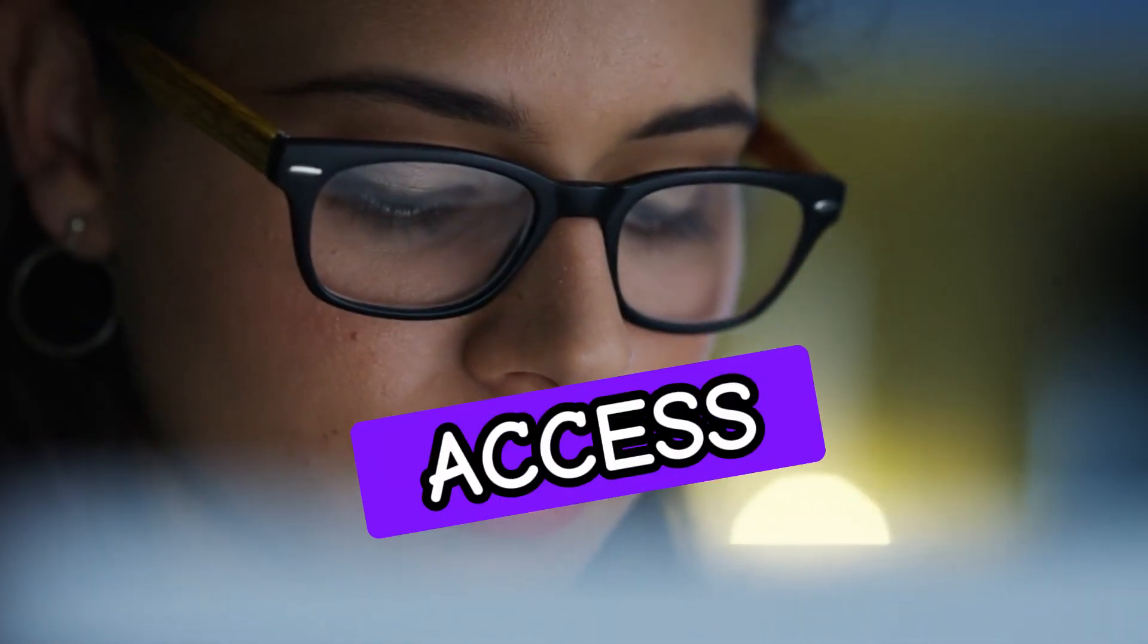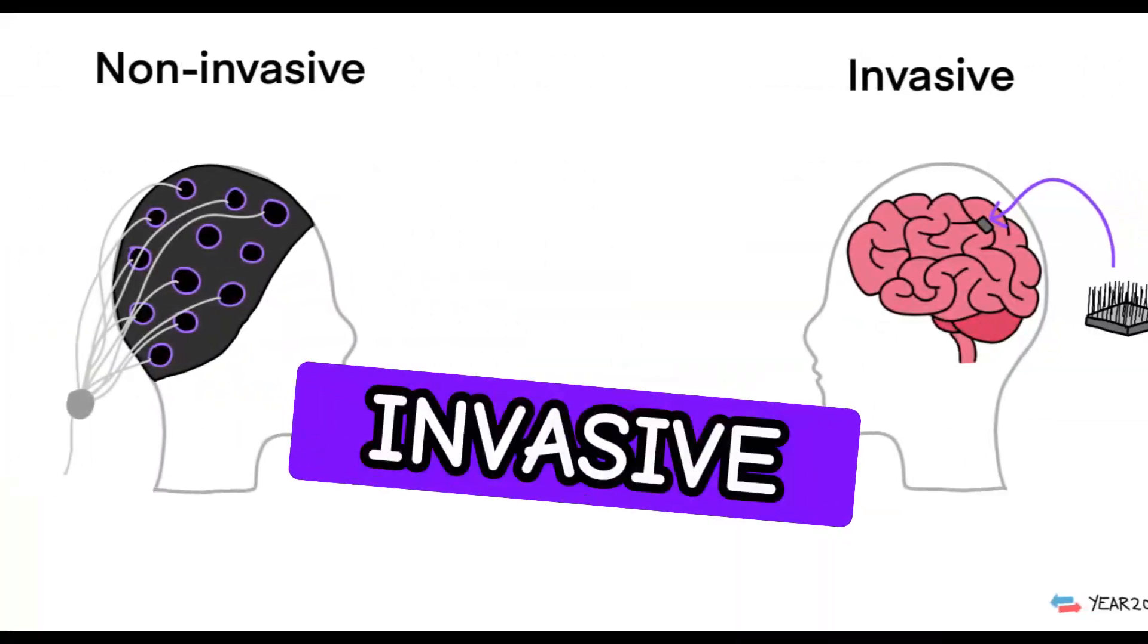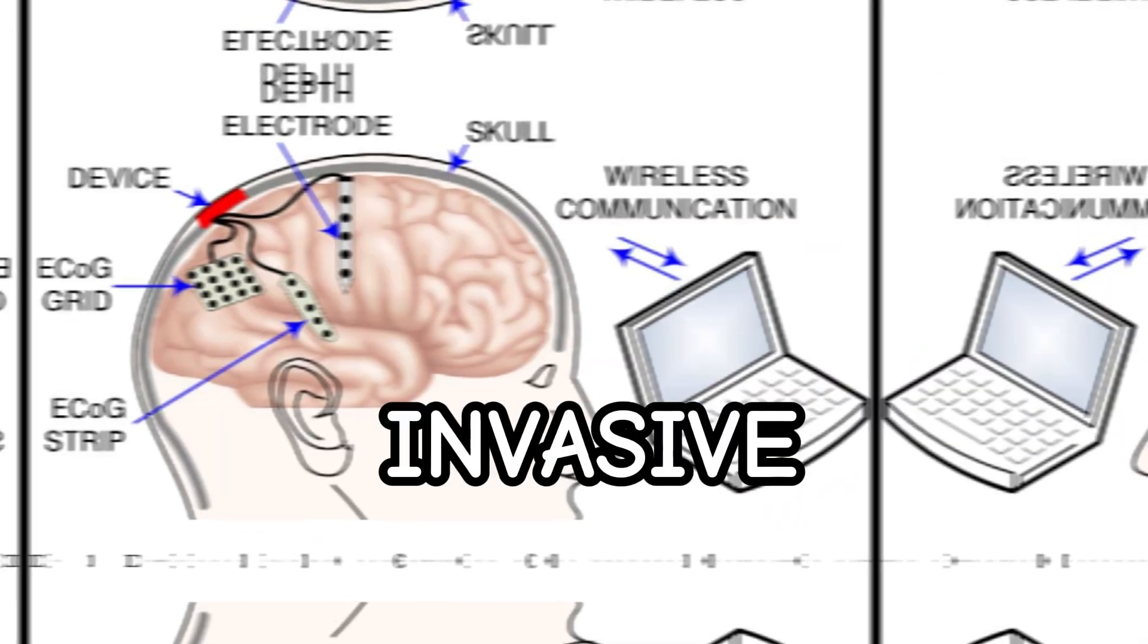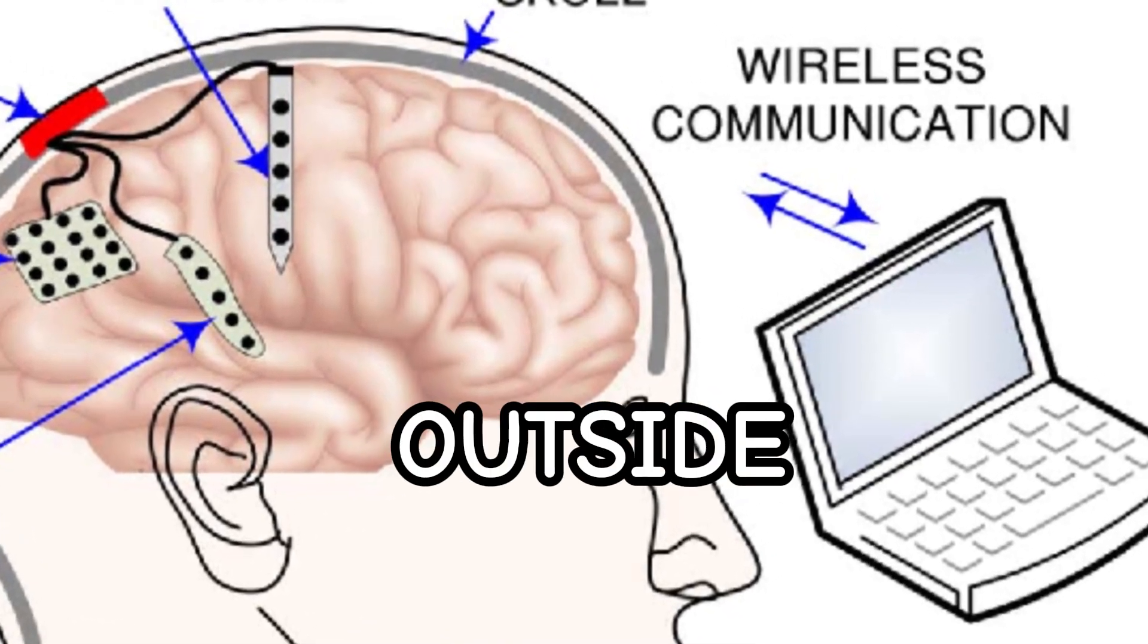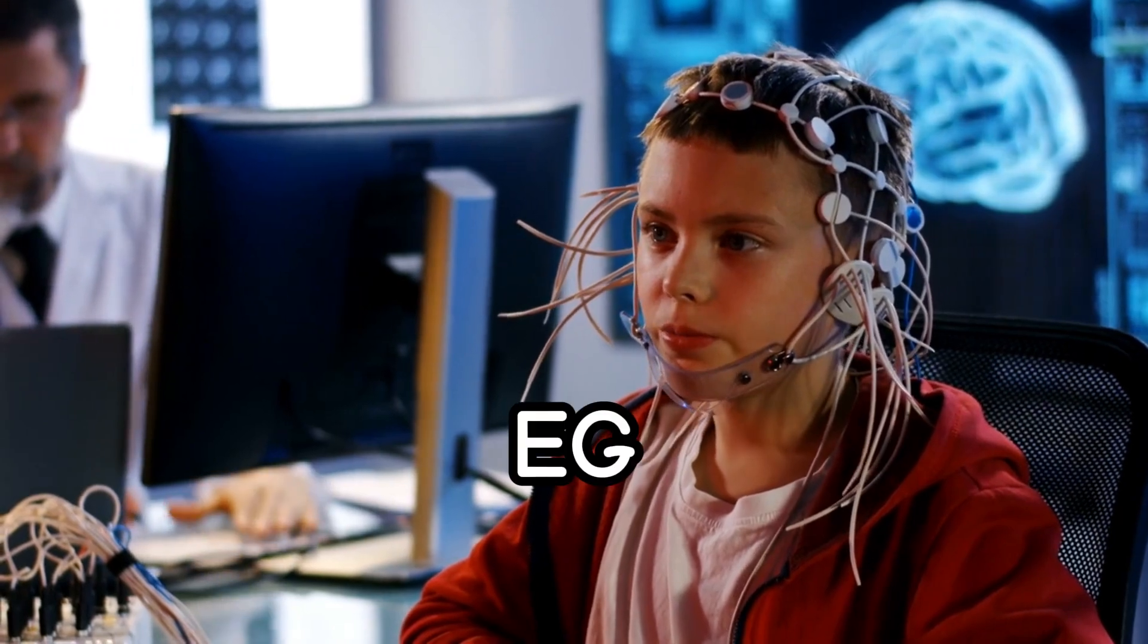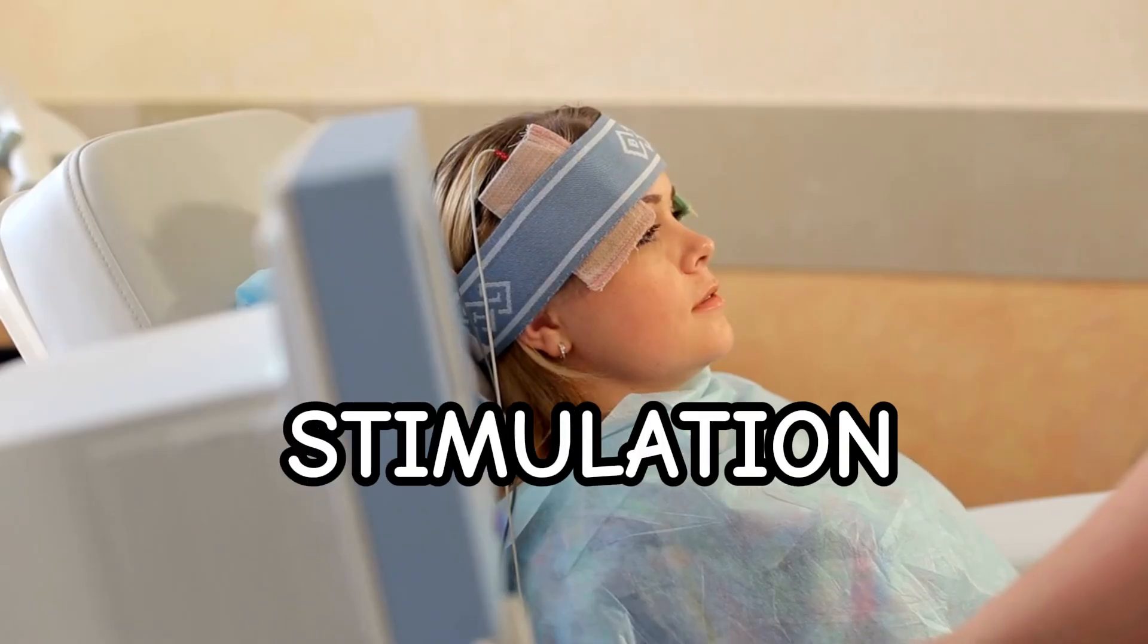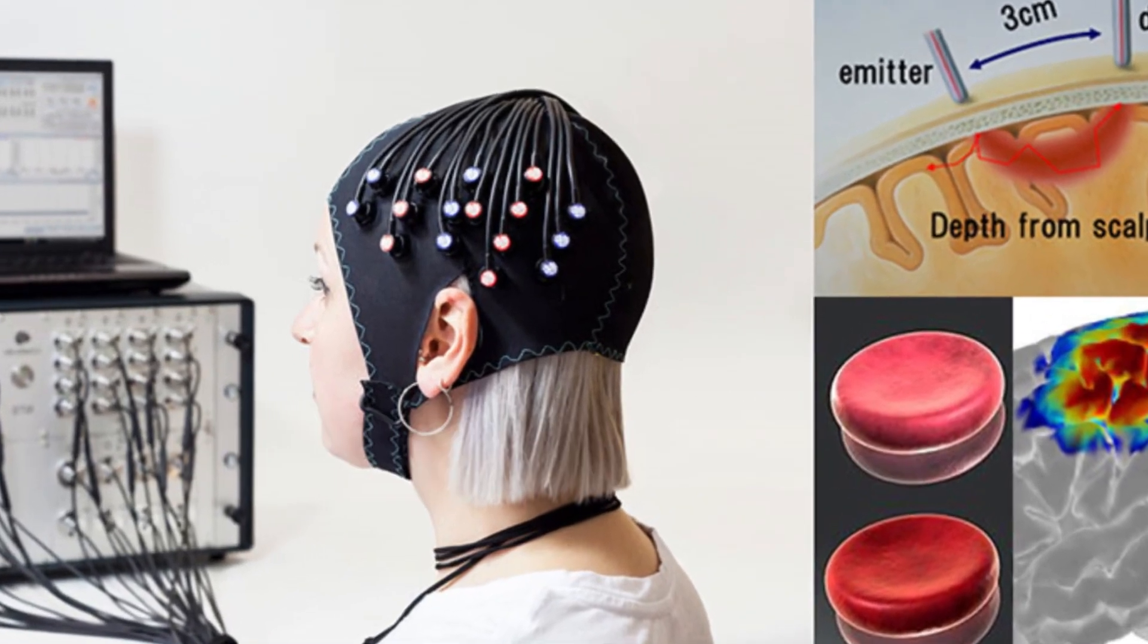But how can a BCI access the brain? Well, there are two main types of BCIs, invasive and non-invasive. Non-invasive BCIs are devices that can record or stimulate the brain from outside the skull, using techniques such as electroencephalography (EEG), transcranial magnetic stimulation (TMS), or functional near-infrared spectroscopy (FNRS).